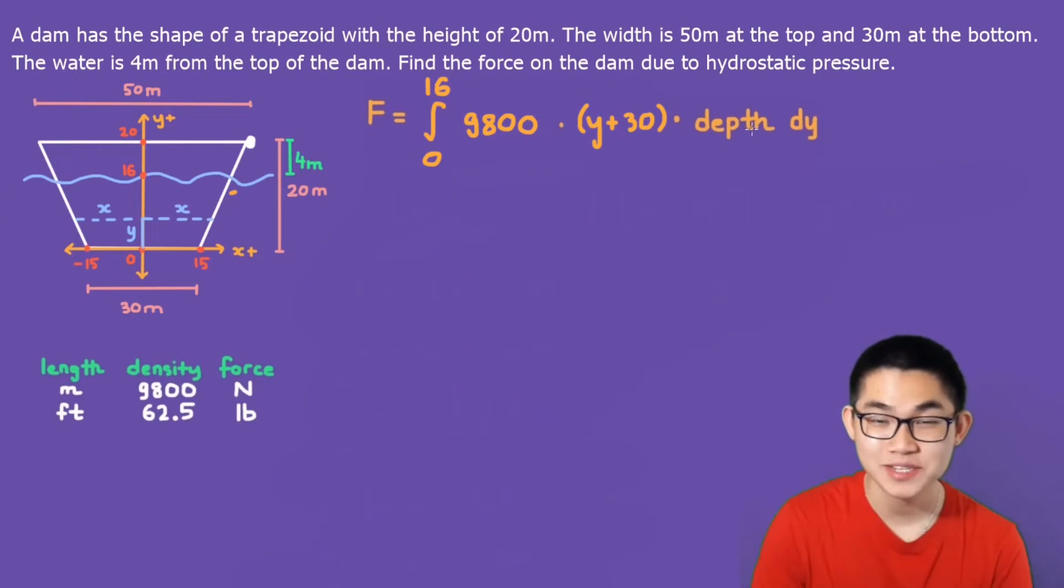Last but not least, we need to find the depth. So the depth is the distance between our stripe to the surface level of the water. So that's going to be this distance. We want to find this depth right there.